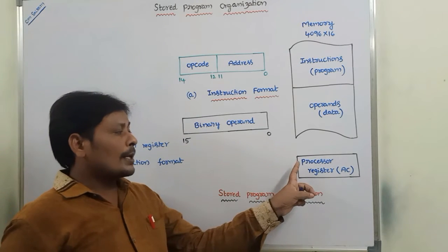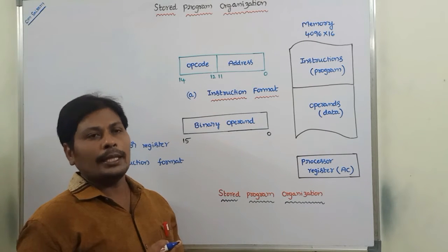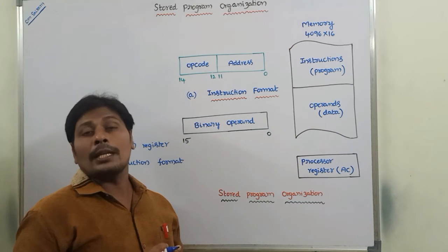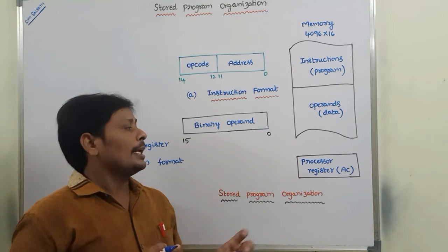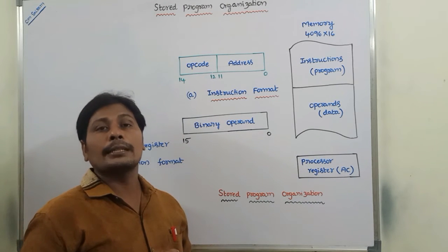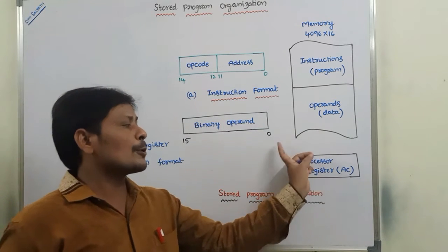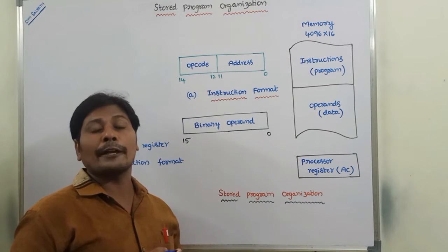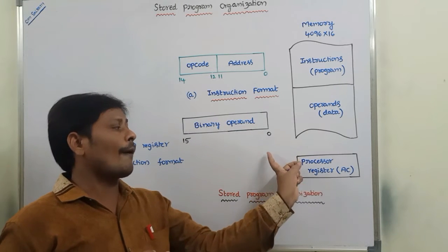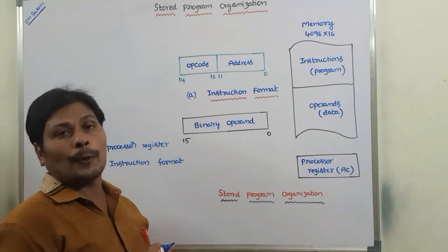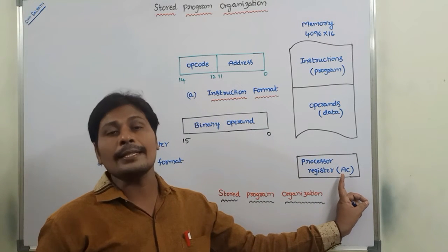The processor register can also be called as accumulator. It is one of the special CPU registers that resides in the central processing unit. It can be used for temporary storage purposes, and it can also store the operands. Once we are performing the operation, whatever result we are getting, that result is also stored in the processor register. It can be denoted by AC, that means accumulator.